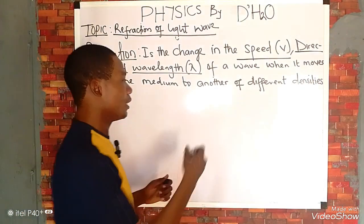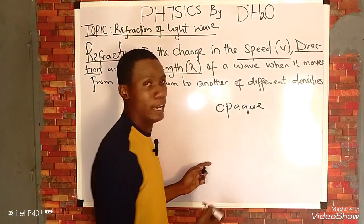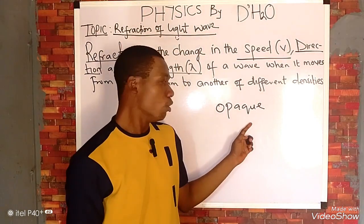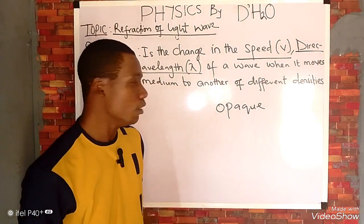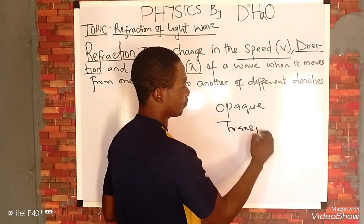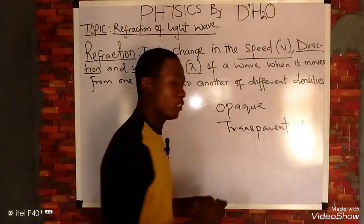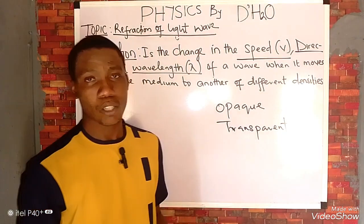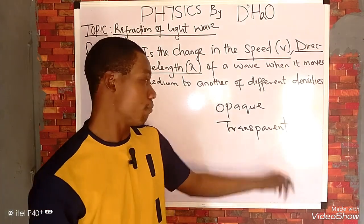There is a material called opaque material. Opaque materials are those materials that do not allow light to pass through them — what you can observe from opaque material is reflection of light. There are also transparent materials, which allow light to pass through, and a large amount of light can pass through a transparent material.